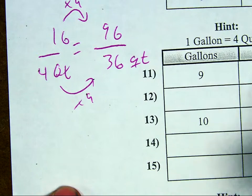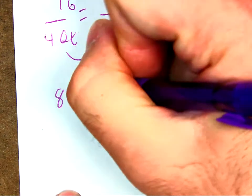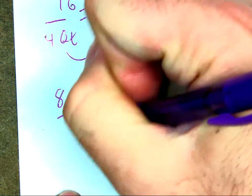So to go the other way, if I have 8 quarts, I have to figure out how many gallons I have. If I have 8 quarts, I want to find out how many gallons I have.